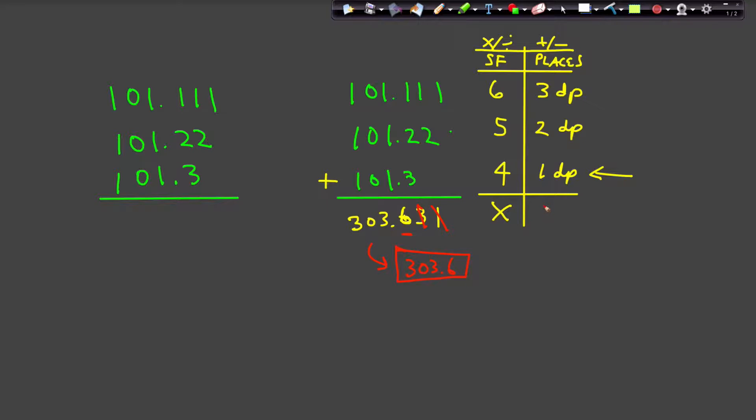And so my final answer becomes 303.6. And you can see, indeed, this is going to be good to, I should have written this down here to make this clear. So my least precise number is good to the first decimal place. So you can see my answer is good to the first decimal place as a result of adding and subtracting.